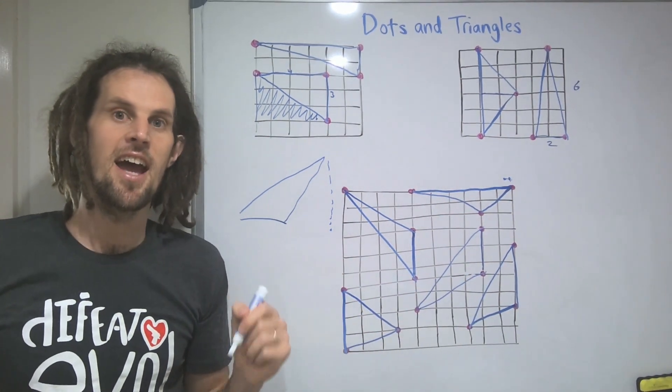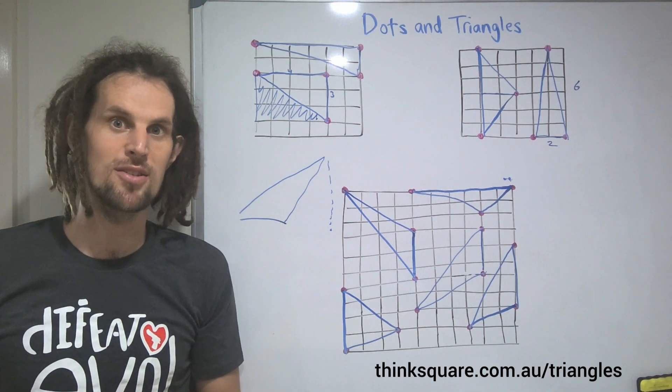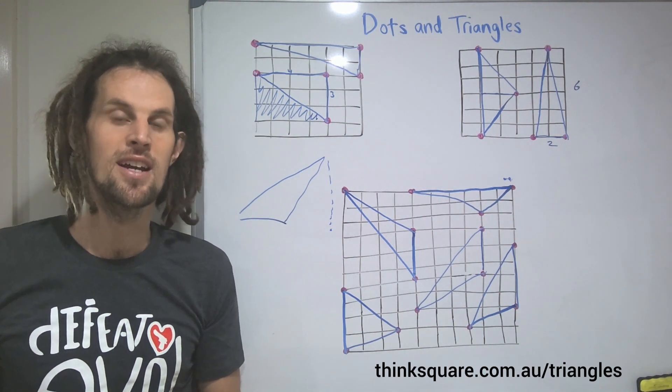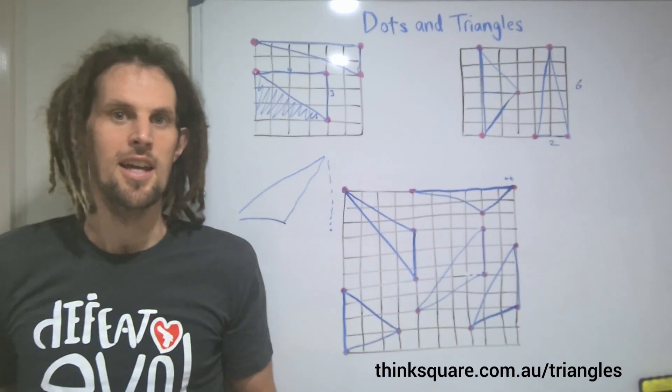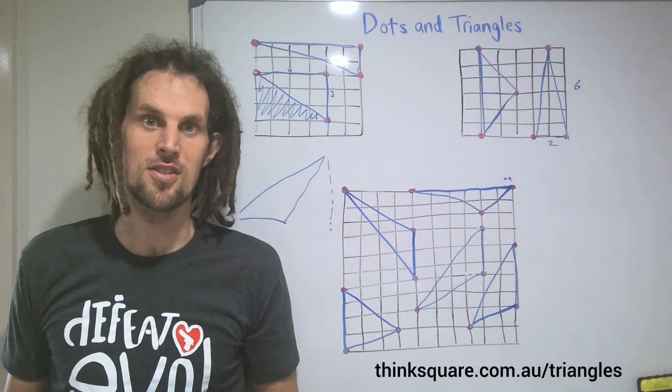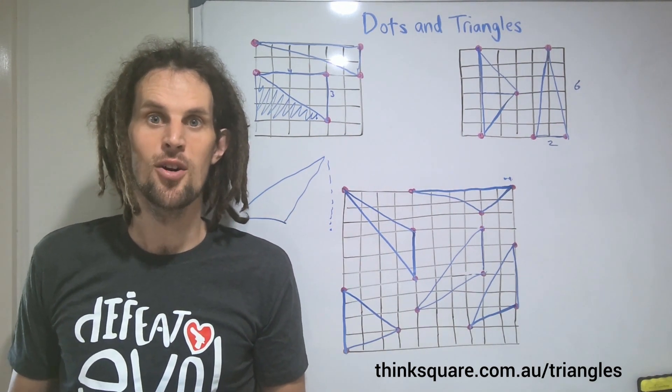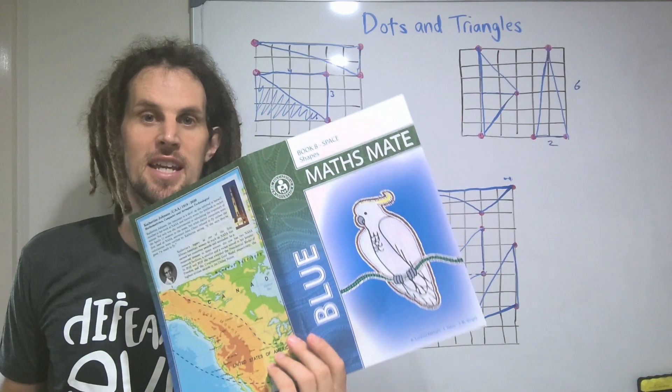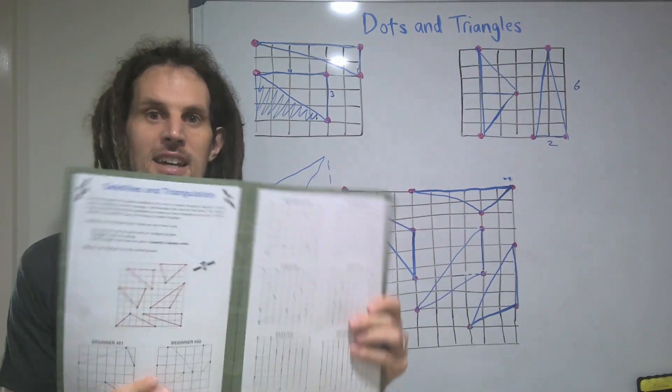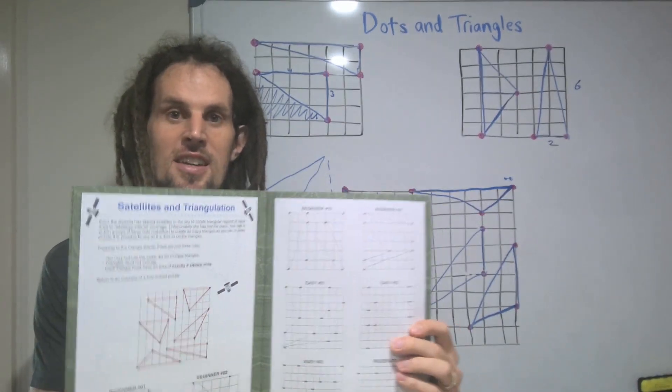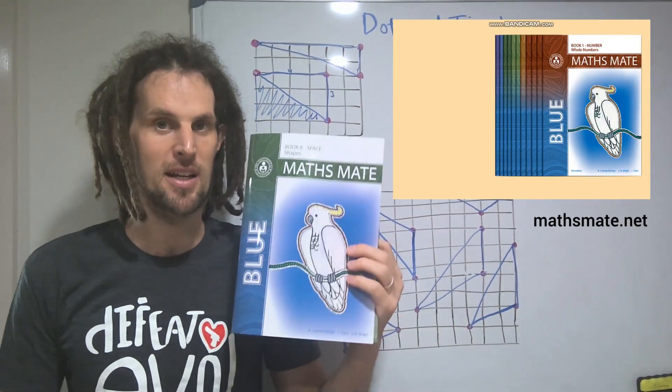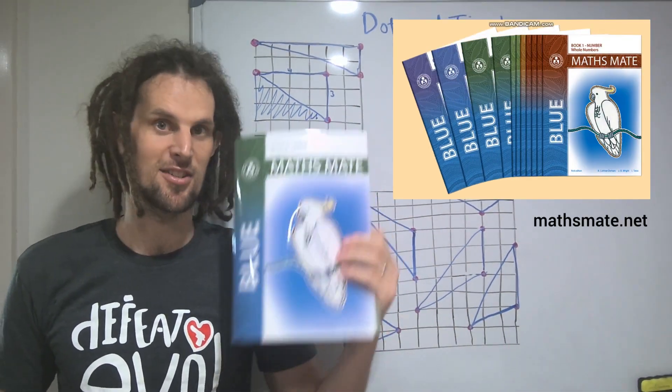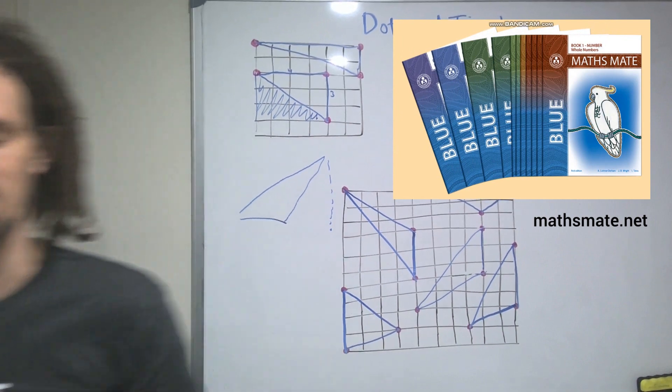Now, they get even harder than this. And you can download a set of 10 puzzles at thinksquared.com.au slash triangles. If you're looking for more puzzles, you can purchase the full set by the same link. Or you can check out the MathsMate Year 7 and 8 textbooks. Every book starts and finishes with a puzzle like this across a wide range of content topics. So MathsMate.net, check them out. Enjoy.